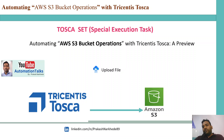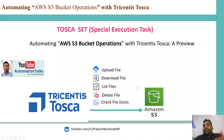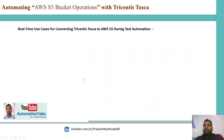If in your project you have multiple operations that deal with AWS S3 bucket, I feel this utility — this Special Execution Task — is going to be helpful. As part of this S3 bucket operations series, I'll cover how to upload a file, download a file, list files, delete files, and check if a file exists — all from Tricentis Tosca to Amazon S3.